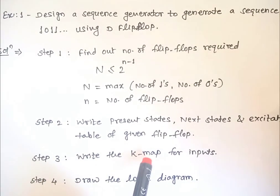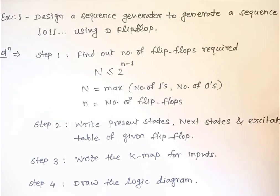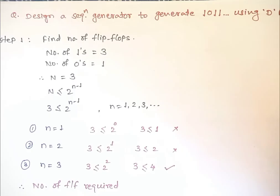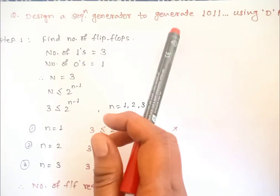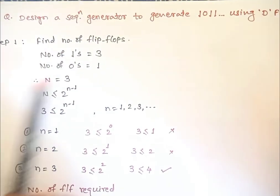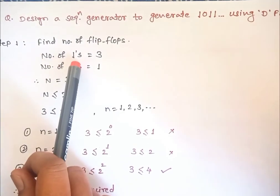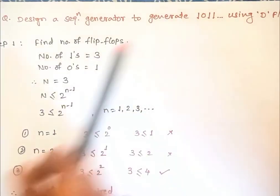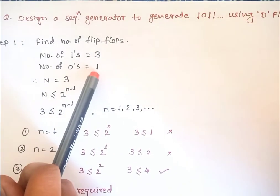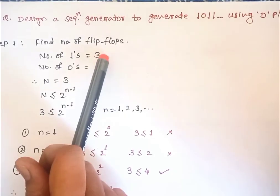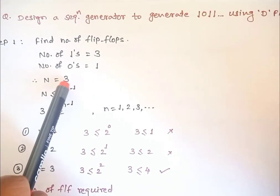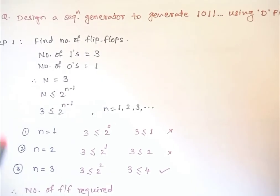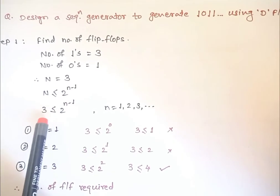Let us actually design this now. First, find out the number of flip-flops. In the given sequence 1011, the number of ones is three and the number of zeros is one. The maximum between these two is three, so capital N is equal to three.